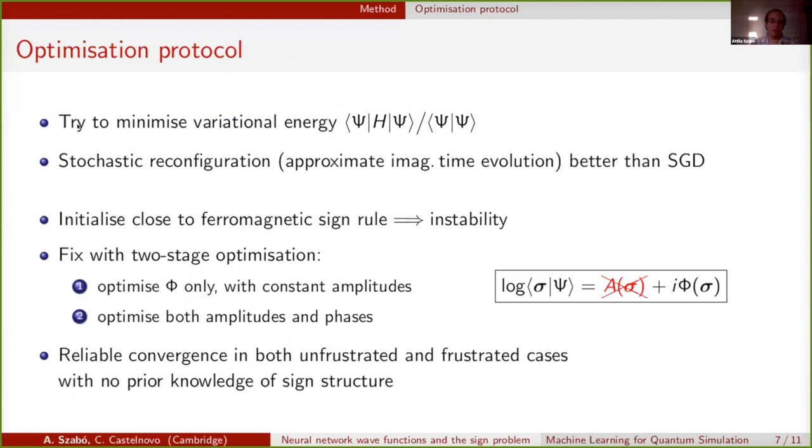Now on to the optimization protocol. We try to minimize the variational energy. There are two major ways to do it, stochastic reconfiguration and just stochastic gradient descent. We opted to go for stochastic reconfiguration. The problem we face here is that the natural optimization of this network for Phi is that all of the outputs are close to zero, so we effectively have a sign-free wave function which is consistent with a ferromagnetic sign rule. If we try to start here and learn an antiferromagnetic sign structure, that's bound to be unstable. What we do about this is that we first optimize the phases on their own, keeping all the amplitudes constant, which means that we just switch off this network for the amplitudes. This allows us to get some broadly antiferromagnetic correlations between the phases. Then we can turn on the optimization of both the amplitudes and the phases without blowing up.